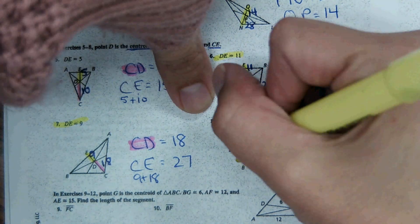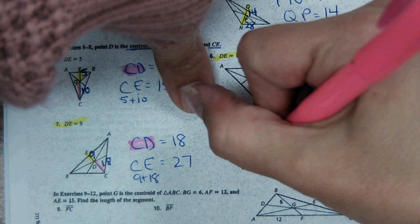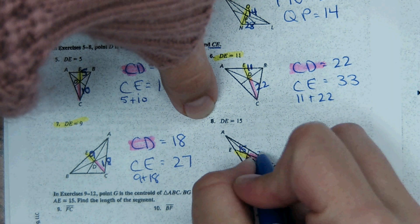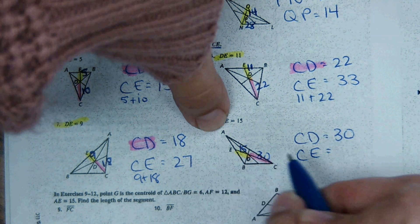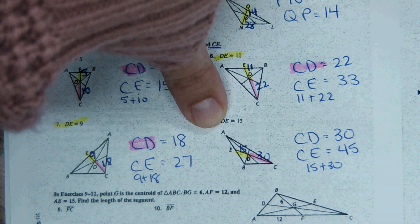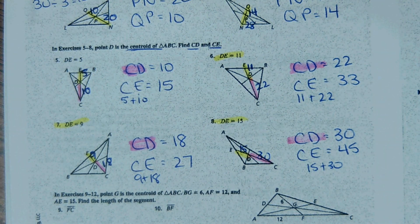Number 8, same thing. DE is 15. DC is a longer portion of the segment, so we'll just double it to get 30. And then 15 plus 30 gives you the entire segment, so it would be 45. So this is pink, and this is yellow.